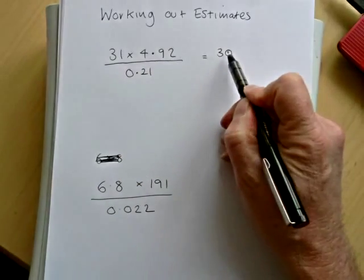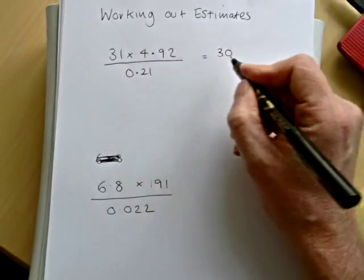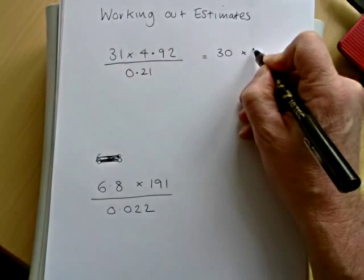We've got to change it into something that's easier to work with. Now times 4.92, well, that is very close to 5.